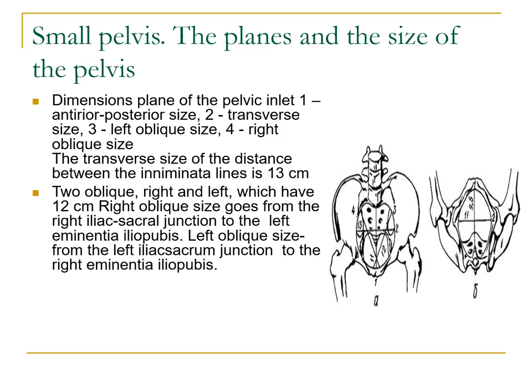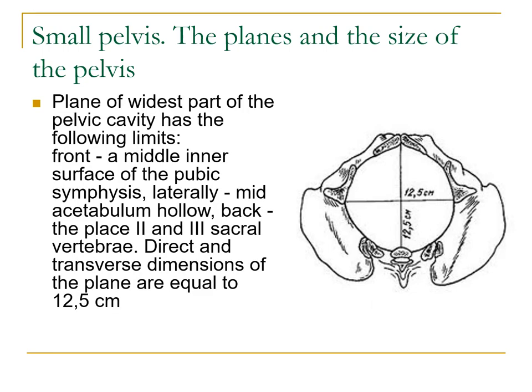Your right oblique size goes from your right iliosacral junction to the left eminentia iliopubica. Your left oblique size goes from the left iliosacral junction to the right eminentia iliopubica. The plane of the widest part of the pelvic cavity is bounded in front by the middle inner surface of the pubic symphysis, laterally by the mid-acetabular hollow, and at the back by the 2nd and 3rd sacral vertebrae. The direct and transverse dimensions of this plane are equal to 12.5 centimeters.